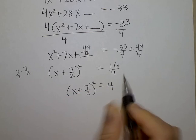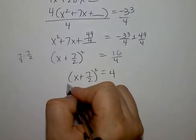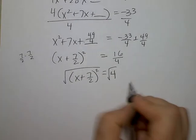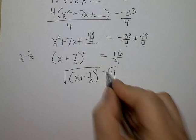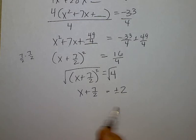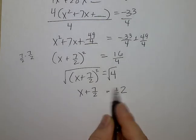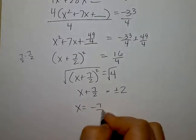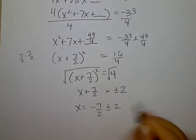This tells you two answers, and you get those two answers by taking the square root of 4, placing a plus or minus in front. Then I'm going to take the 7 halves and move it over, making it negative 7 halves. One time I add and one time I subtract.